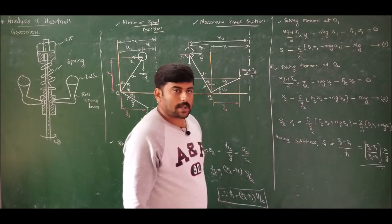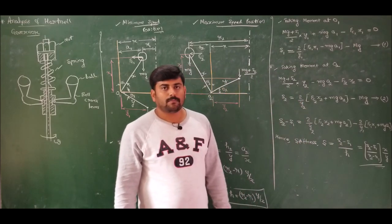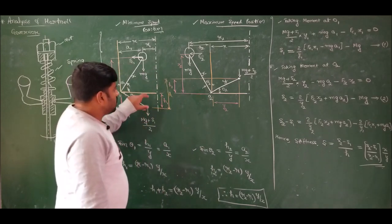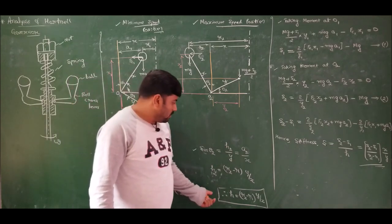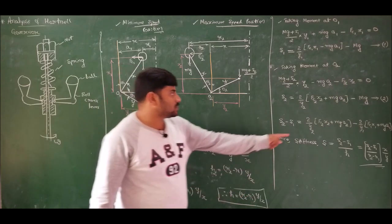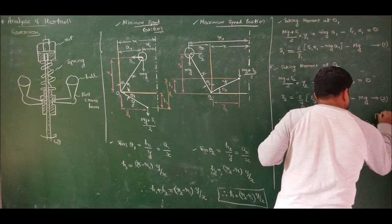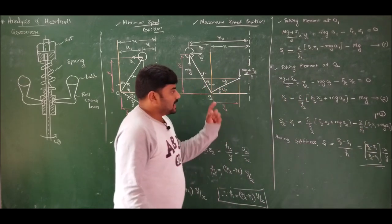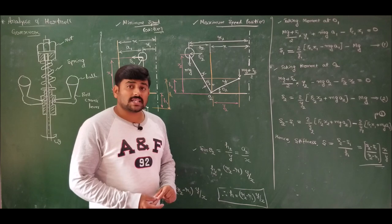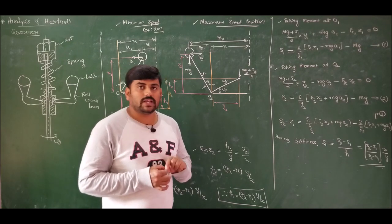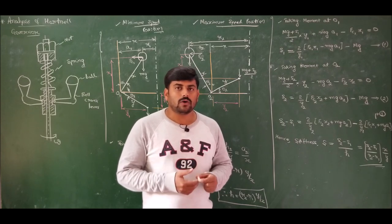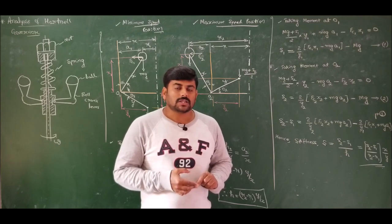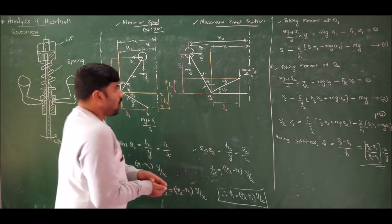The unit is Newton per meter. Spring stiffness is the force required per unit deflection of the spring. Effective force is S2 minus S1, and total deformation or lift or compression is h. This full expression with obliquity should be used only if the problem clearly states to consider the obliquity effect and mass of the ball.